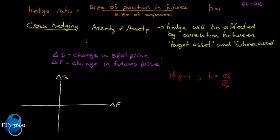Well, what happens when the asset that you have exposure to does not have a futures contract and you have to use another asset underlying the futures contract to hedge out? That's called cross-hedging, and that hedge will be affected by the correlation between the target and the futures asset.